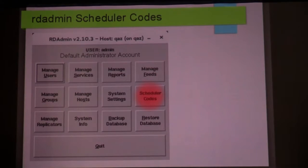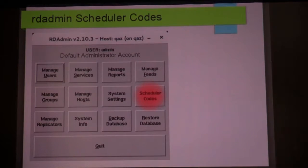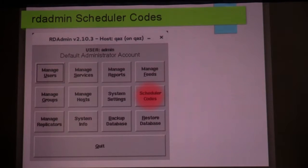Rivendell honors the metadata that's in your tracks. It obviously knows about artist, song title, album title, the year the thing was released, and the record label that published it. It also has things that you can apply over and above the default tags that come with the track, and those are called scheduler codes. The reason they're called scheduler codes is that they're used by the rules that Rivendell has to choose music when automatically building a playlist.